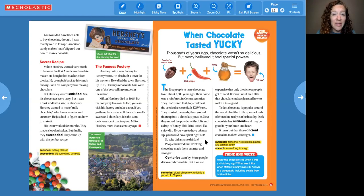Pause. Do you remember how many years are in a century? We did that on our secret math the other day. A hundred years. So if it's centuries, that tells me it's multiple hundreds of years. More people discovered chocolate, but it was so expensive that only the richest people got to eat it. It wasn't until the 1800s that chocolate makers learned how to make it taste good. Today, chocolate is popular around the world. And the truth is some kinds of chocolate really can be healthy. Dark chocolate has nutrients, items that help people, plants, and animals grow, and may be good for your brain and heart. It turns out that those ancient chocolate makers were right. And ancient means from a long time ago.